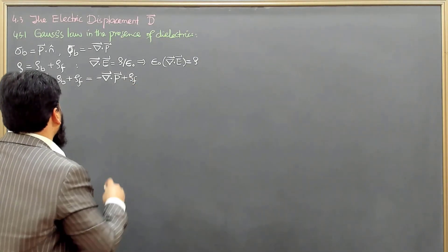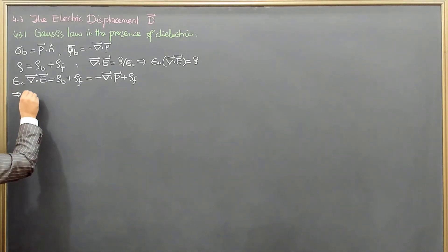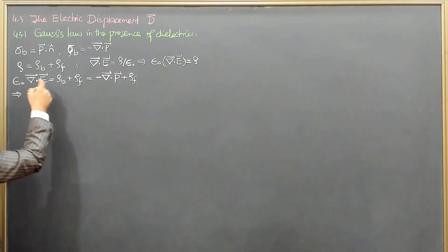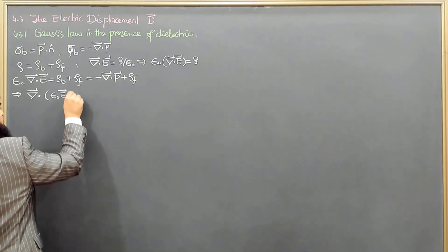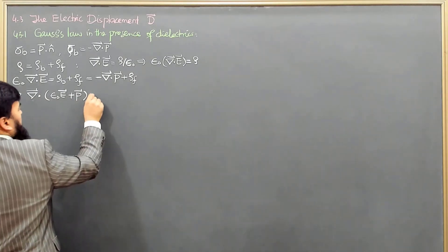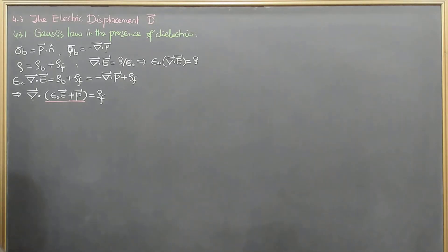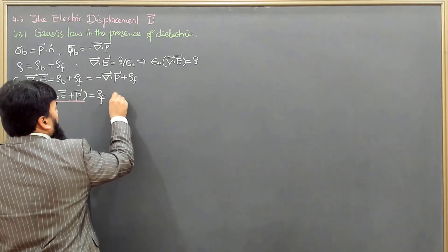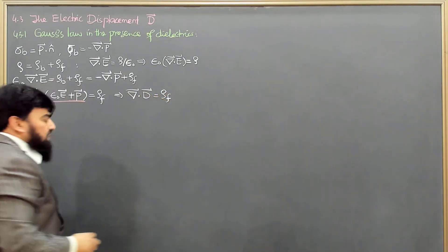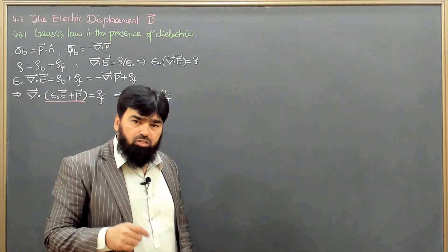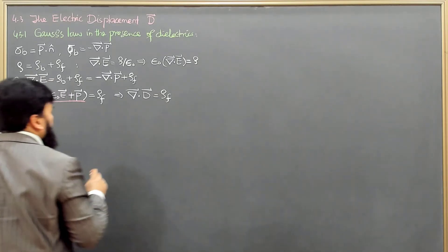Rearranging, we get ∇ · (ε₀E + P) = ρ_f. The term ε₀E + P I call the electric displacement D. So the divergence of D equals ρ_f: ∇ · D = ρ_f. This is Gauss's law for dielectrics — or Gauss's law for free charges only.